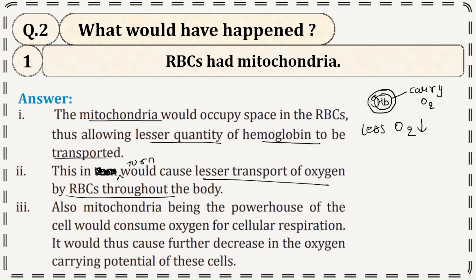Oxygen is very important for our body and health. Also, mitochondria being the powerhouse of the cell would consume oxygen for cellular respiration. So the oxygen being carried to cells would be consumed by mitochondria sitting in the RBC, further decreasing oxygen levels in the body.